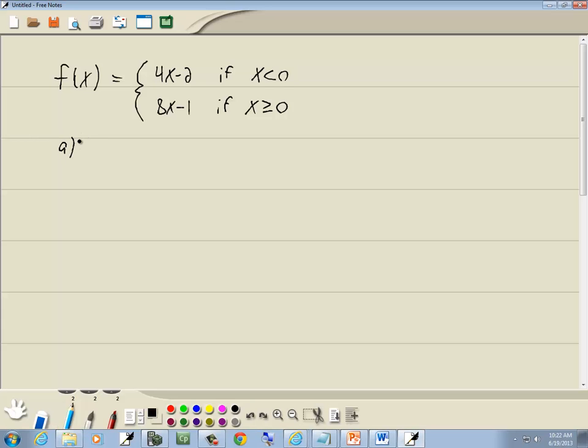Part A: We want to find f(-3). Remember, when your number is inside the parentheses in function notation, that's your x. So they're telling us x is negative 3. We plug that into our conditions: negative 3 is less than 0, and negative 3 is greater than or equal to 0. We see which one's true. Well, negative 3 is less than 0. Since this one's true, we plug it into this piece.